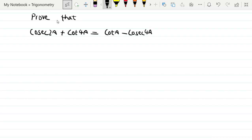Prove that cosec2A plus cot4A equals cotA minus cosec4A. What we are going to do is prove it by transposing.